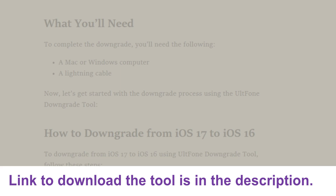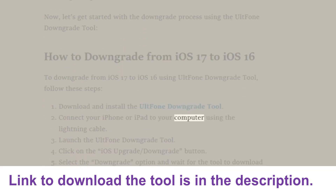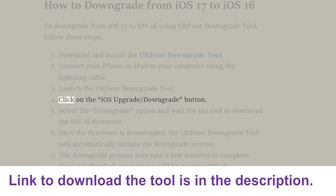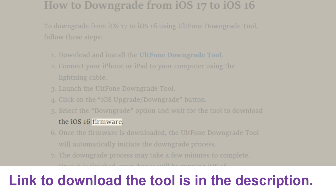Download and install the ULT Phone Downgrade tool. Connect your iPhone or iPad to your computer using the Lightning cable. Launch the ULT Phone Downgrade tool. Select the downgrade option and wait for the tool to download the iOS 16 firmware.